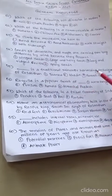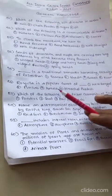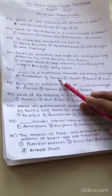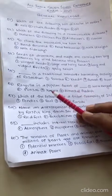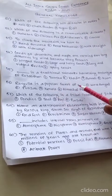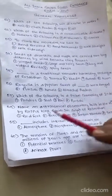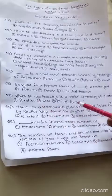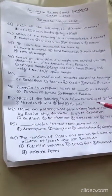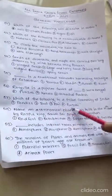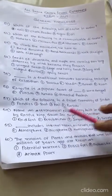A traditional water harvesting technique of Rajasthan is Tanka. Rasgulla is the popular sweet of West Bengal, as everyone knows. Which of the following is a tribal community of India? Bheel — because all the other three are castes.